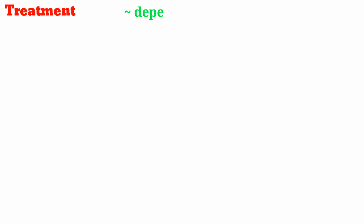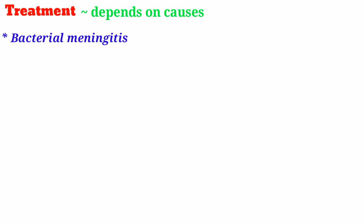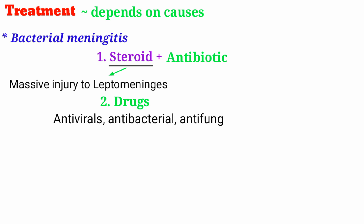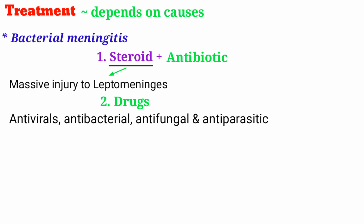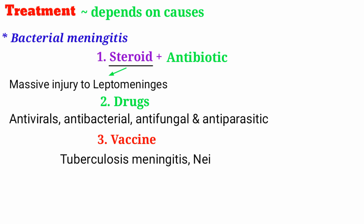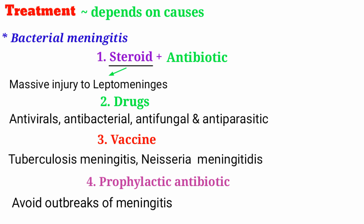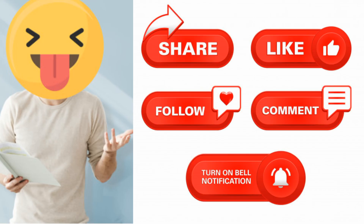The treatment of meningitis depends on the underlying cause. For bacterial meningitis, it is common to administer steroids and then antibiotics to prevent massive injury to the leptomeninges from the inflammation. General drug treatments like antiviral, antibacterial, antifungal, and antiparasitic drugs are aimed at the specific cause. Vaccines can also prevent meningitis — such as for tuberculosis meningitis and Neisseria meningitidis. Prophylactic antibiotics can also be administered to avoid outbreaks of bacterial meningitis.